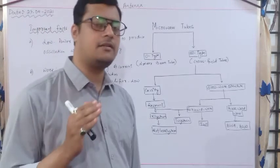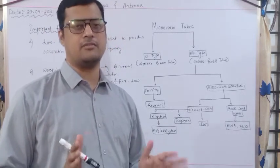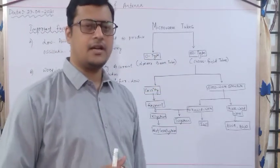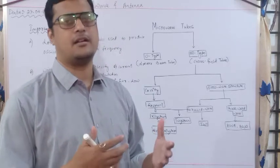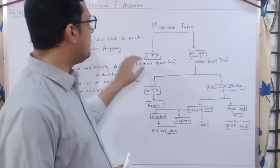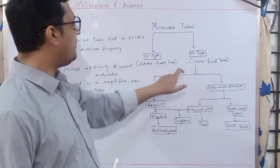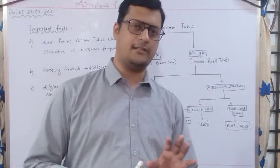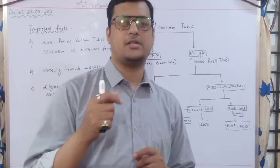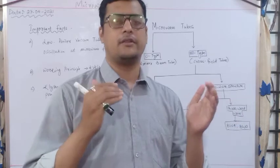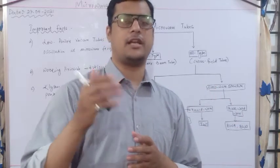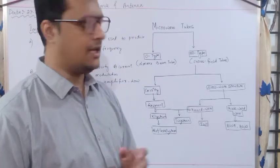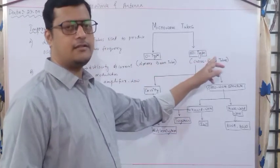Since in our syllabus only the reflex klystron is available, we are only going to discuss the reflex klystron. But you should know how many types of microwave tubes are available and how they are categorized and classified. Microwave tubes are of two types: one is O-type and one is M-type. O-type means it is the ordinary tube, also called a linear beam tube, in which the beam is projected from cathode to anode with a linear variation and no change in the velocity of an electron.